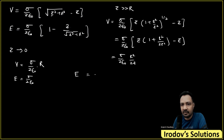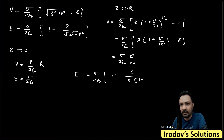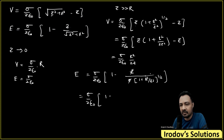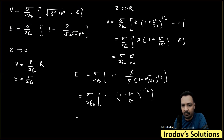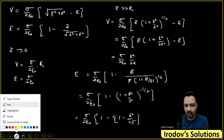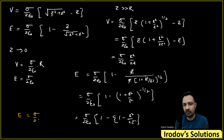For the electric field in the same limit, E = sigma/(2ε₀) · [1 − 1/√(1 + R²/z²)] ≈ sigma/(2ε₀) · [1 − (1 − R²/(2z²))] = sigma/(2ε₀) · R²/(2z²), which gives E = sigma·R²/(4ε₀·z²), exactly equal to kq/z². This confirms the result. Thank you.